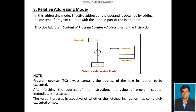Relative Addressing Mode: In this addressing mode, the effective address of the operand is obtained by adding the content of the Program Counter with the address part of the instruction. Effective Address = Content of PC + Address part of the instruction. The instruction contains an operand and opcode; the operand portion adds the accumulator value with the Program Counter value to get the effective address, from which the operand is accessed from memory.